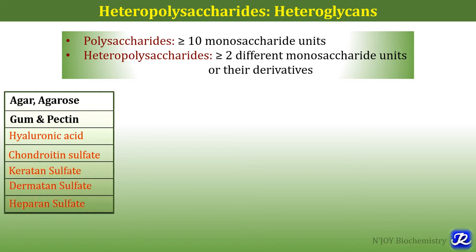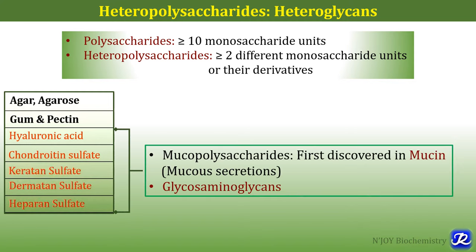Out of these heteropolysaccharides, hyaluronic acid, chondroitin sulfate, keratan sulfate, dermatan sulfate, and heparan sulfate are also called as mucopolysaccharides or glycosaminoglycans. They were named mucopolysaccharides because they were first discovered in mucin. They are also called as glycosaminoglycans or GAGs — amino because they contain amino sugar.